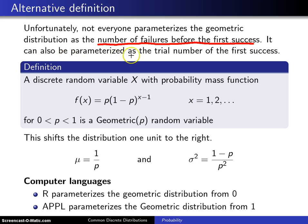You can also parametrize it as the trial number of the first success. Now, there's not much of a difference between these two. And in fact, the number of failures before is always one less than the trial number of the first success.